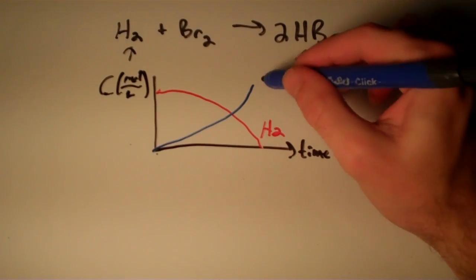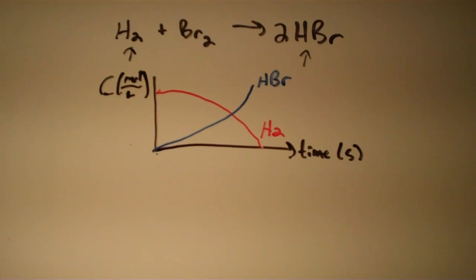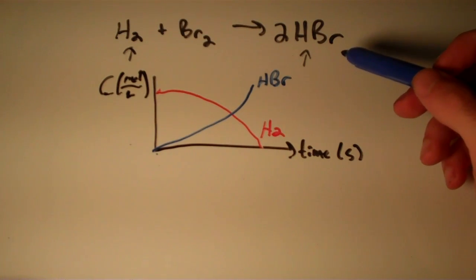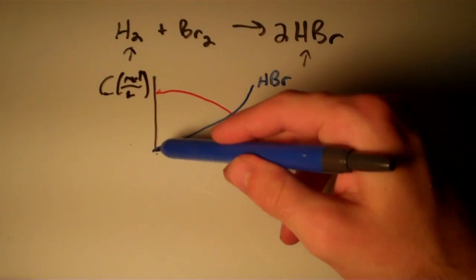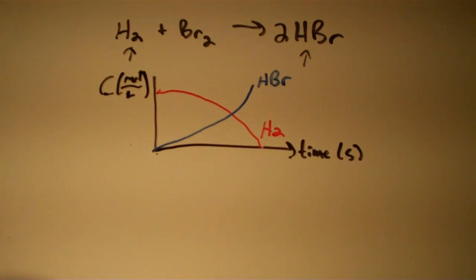The blue curve is for the concentration of HBr. Since HBr is a product, it starts out at zero concentration and increases as the reaction proceeds. So how do we find a rate of a reaction? That's the question.